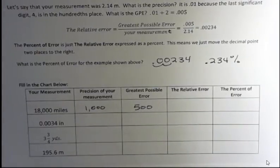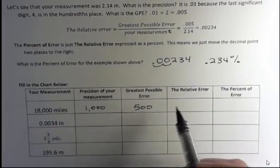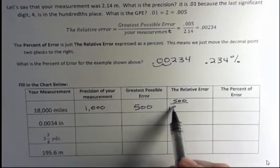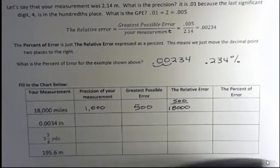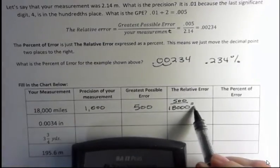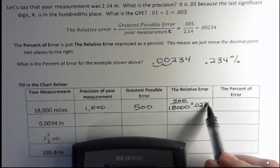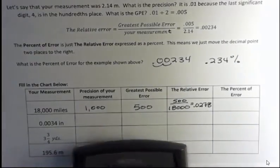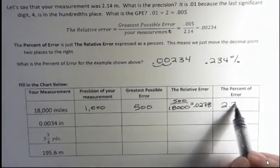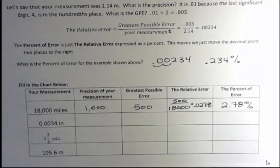What's the relative error? The relative error is your greatest possible error, which is 500, divided by your measurement, which is 18,000. So all I have to do is divide that out. 500 divided by 18,000 is 0.0278. Now the percent error is just taking that relative error and moving that over two places, or 2.78 percent is our percent of error.